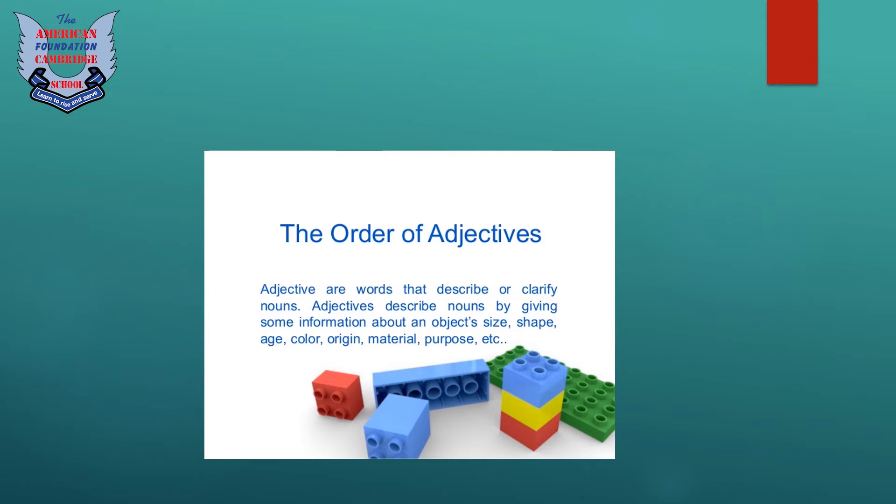Before going towards the order of adjectives, let me explain to you what is an adjective. Adjectives are the words that describe or clarify the nouns. Adjectives describe nouns by defining some information about an object's size, shape, age, color, origin, material, and purpose.